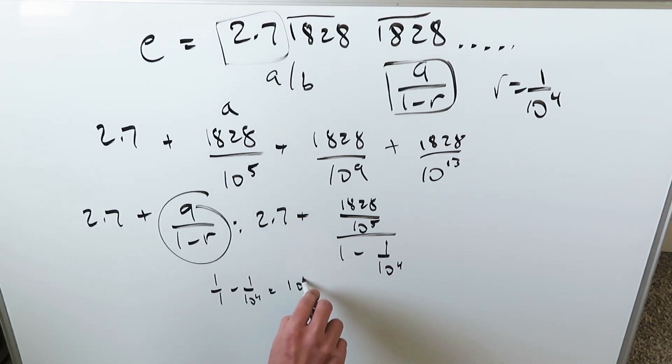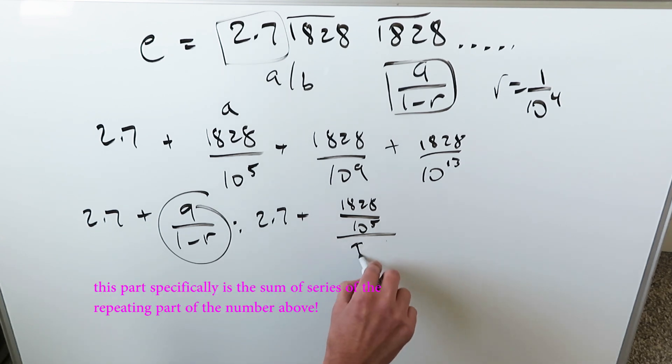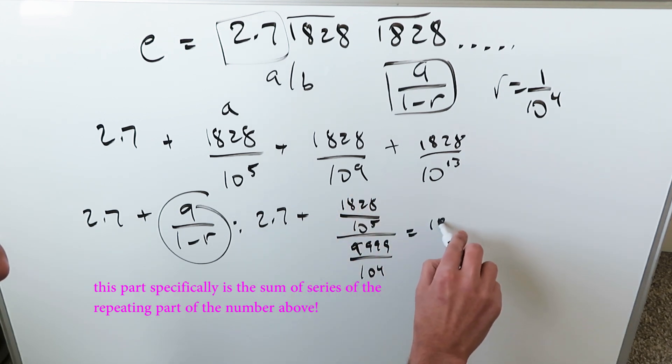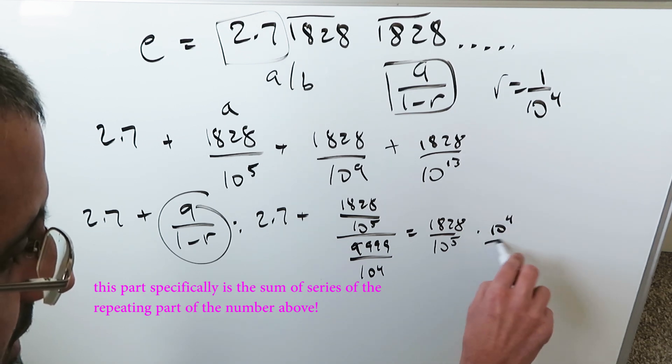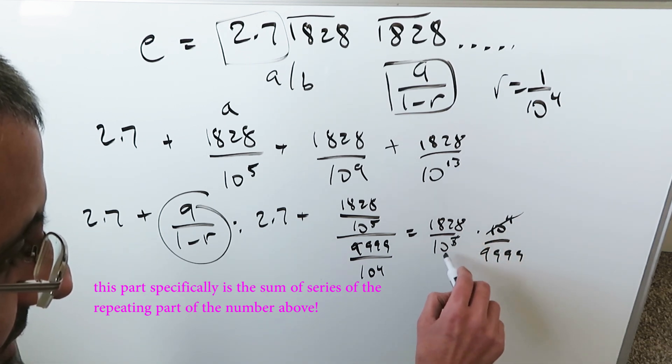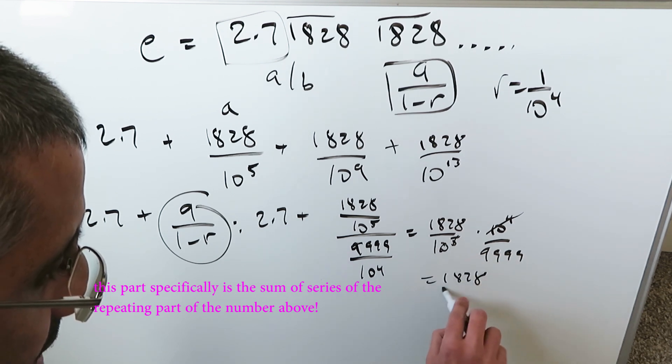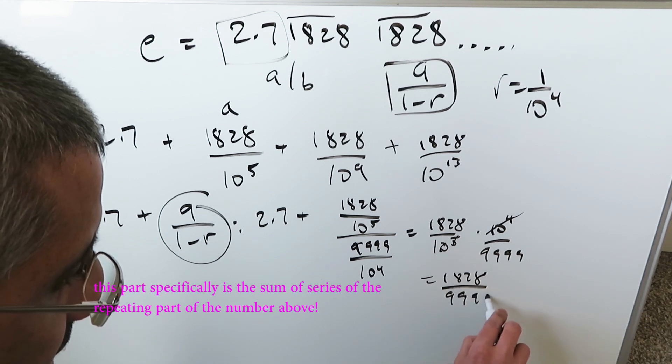to the 4, which would be 10 to the 4 minus 1 divided by 10 to the 4. You know what that would be: 9999 divided by 10,000. Let's bring it into play. It would be 9999 divided by 10,000, which is 10 to the power of 4. You can flip this part and just deal with it: 1828 divided by 10 to the power of 5 times 10 to the power of 4 divided by 9999. This cancels out with this, you'll have 10. This 10 can multiply with this. I'll have 1828 divided by 99,990.